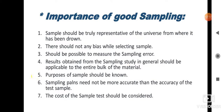Fifth, the purpose of the sample should be known — whatever sample we are taking from the universe or the population, the purpose should be known to us first. Sixth, the sampling plan need not be more accurate than the accuracy of the test sample.